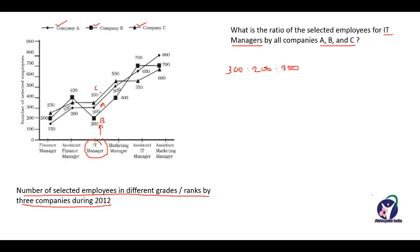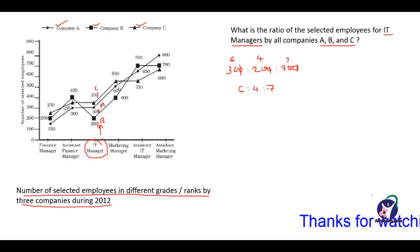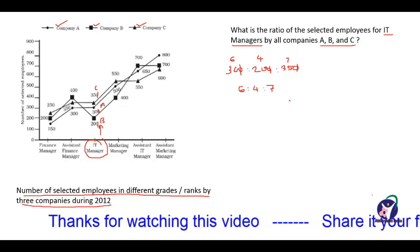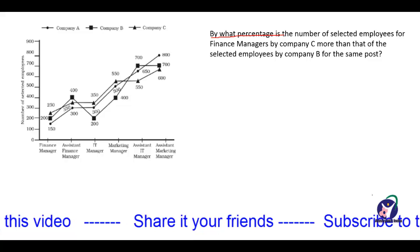You can remove the zero at the unit place, so you get 30, 20, and 35. That gives 30 is to 20 is to 35. Since 5×6=30, 5×4=20, and 5×7=35, the ratio will be 6:4:7. Therefore, the ratio of the selected employees for IT managers in companies A, B, and C is 6:4:7.